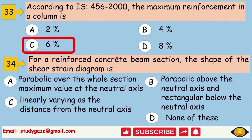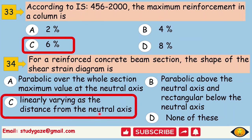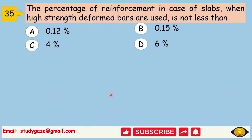For a reinforced concrete beam section, the shape of the shear strength diagram is. Answer is linearly varying as the distance from the neutral axis. The percentage of reinforcement in case of slabs when high strength deformed bars are used is not less than. Answer is 0.12%.